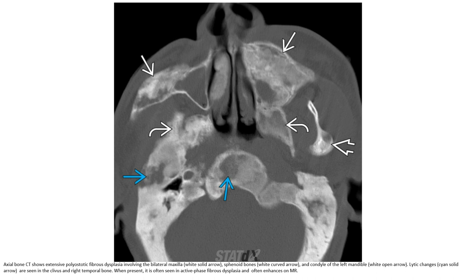Bone CT shows extensive polyostotic fibrous dysplasia involving bilateral maxilla, sphenoid bone, and condyle of the mandible. Lytic chains as seen in clivus and arcuate temporal bone. When present, it is often seen in active fibrous dysplasia and often identified on CT.